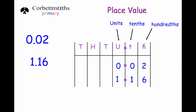The column to the right of the tenths column is the hundredths column. The number 0.02 is 2 hundredths. And the number 1.16 is 1 unit, 1 tenth and 6 hundredths.